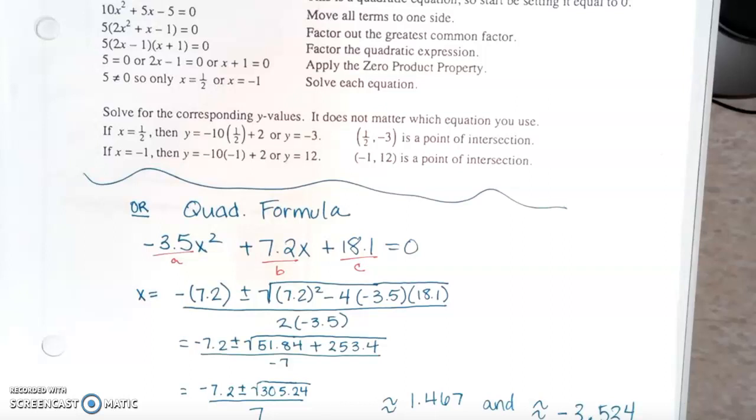Then you simplify, and at some point, you will likely need to plug it into your calculator. So if you plug this into your calculator, you can get two numbers. One, when you use plus, and one, when you use minus.